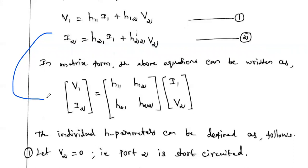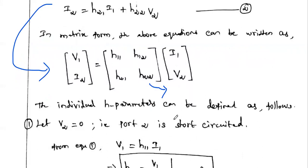We can write the H-parameters in matrix form: [v1; i2] = [h11 h12; h21 h22] · [i1; v2]. This 2×2 constant matrix is called the H-parameter matrix. Now we are going to derive the H-parameter values.